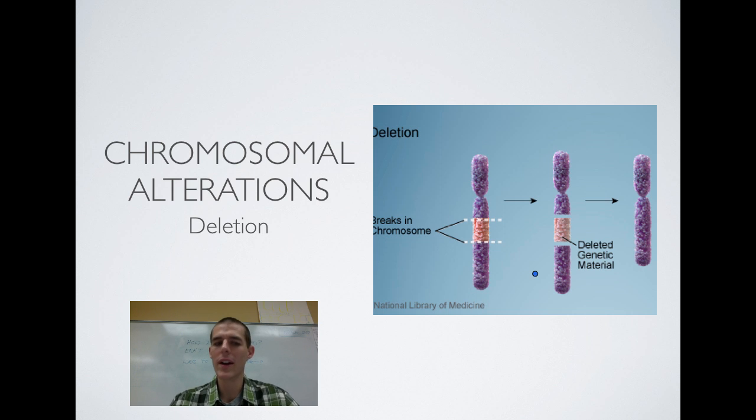So first one is that you can get a deletion. This would likely happen when chromosomes are separating during anaphase of the cell cycle, and in a deletion, it is exactly what it sounds like. A piece of genetic material gets cut out of the situation, and your resulting chromosome is missing some genes. So obviously, that's going to be a problem if some important genes get deleted.